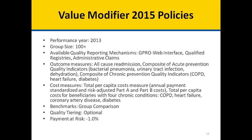The cost measures include total per capita cost measure, which is an annual payment standardized and risk-adjusted Part A and Part B cost, and total per capita cost for beneficiaries with four chronic conditions, which include COPD, heart failure, coronary artery disease, and diabetes. The benchmarks are group comparison, quality tiering is optional, and the payment at risk is negative one percent.